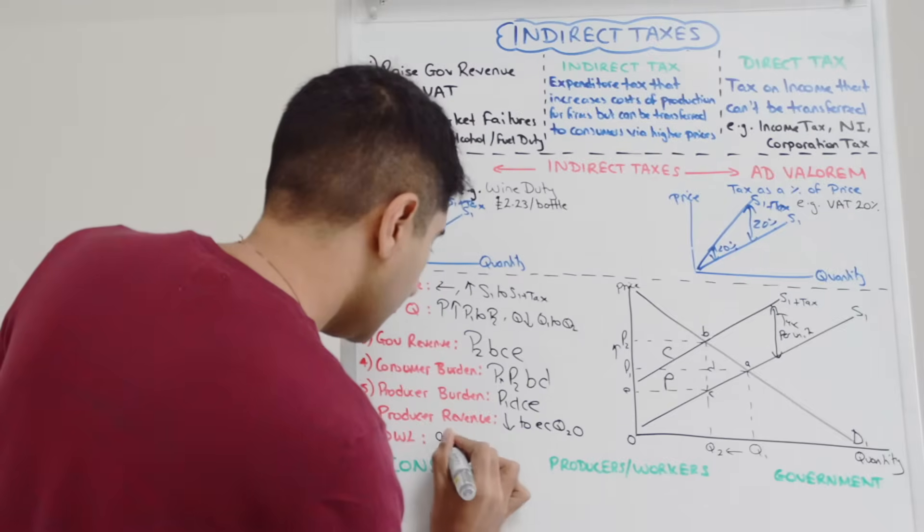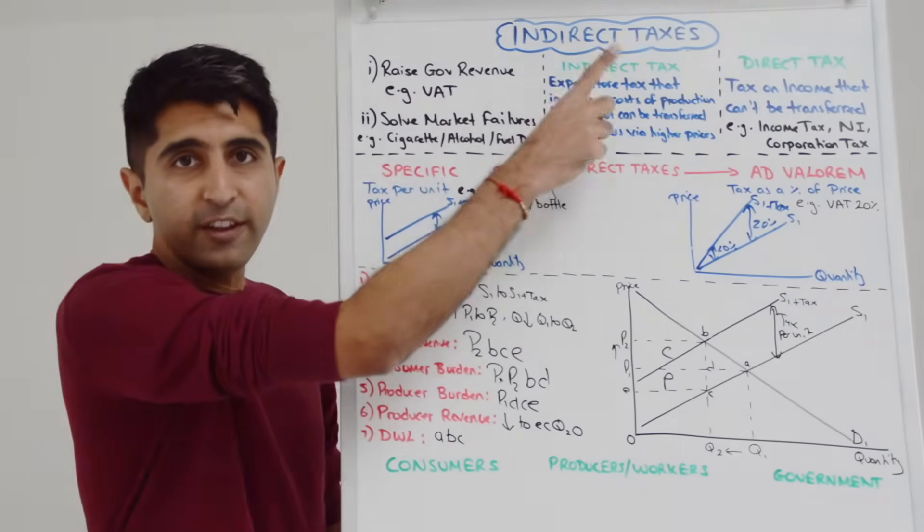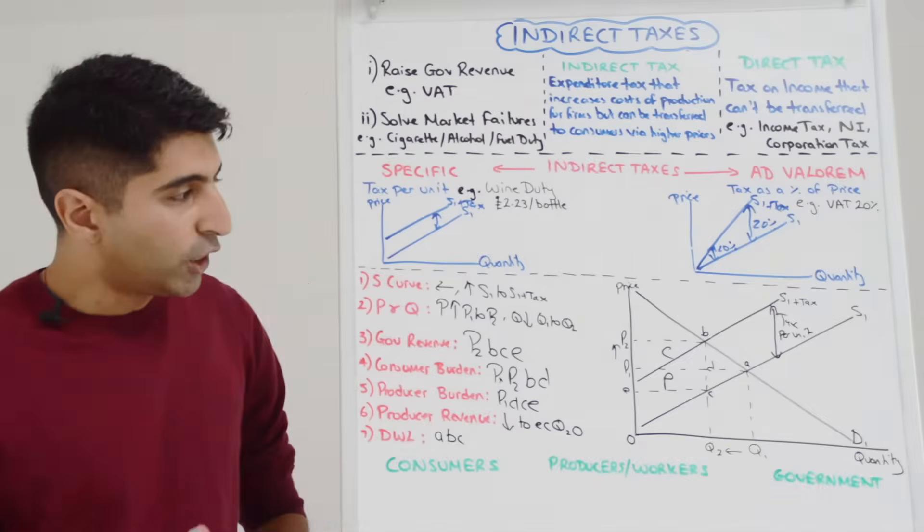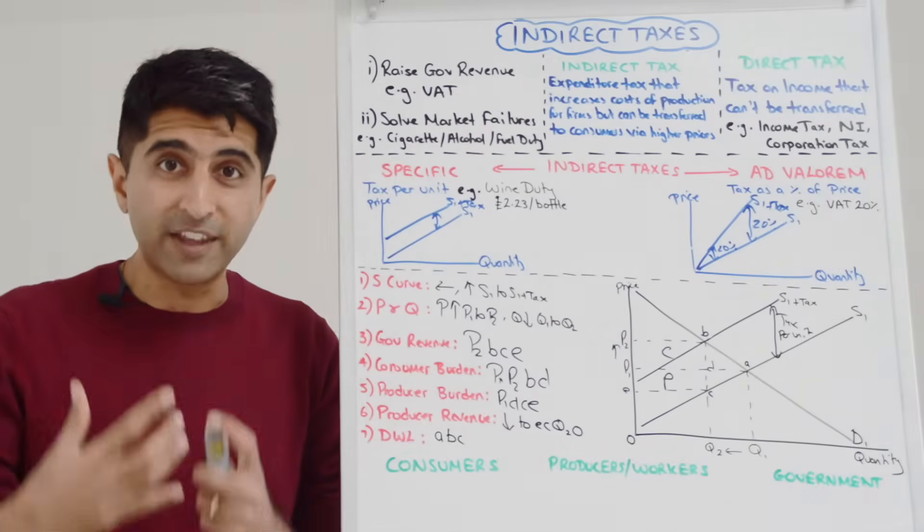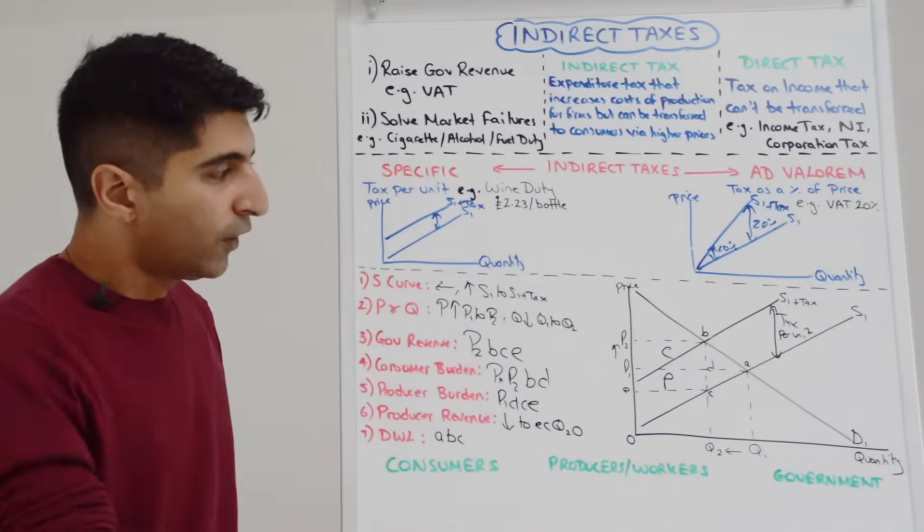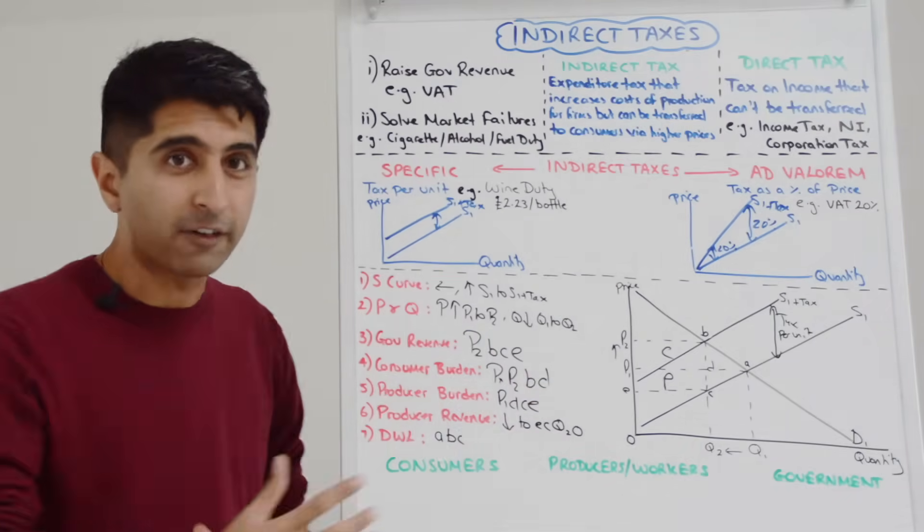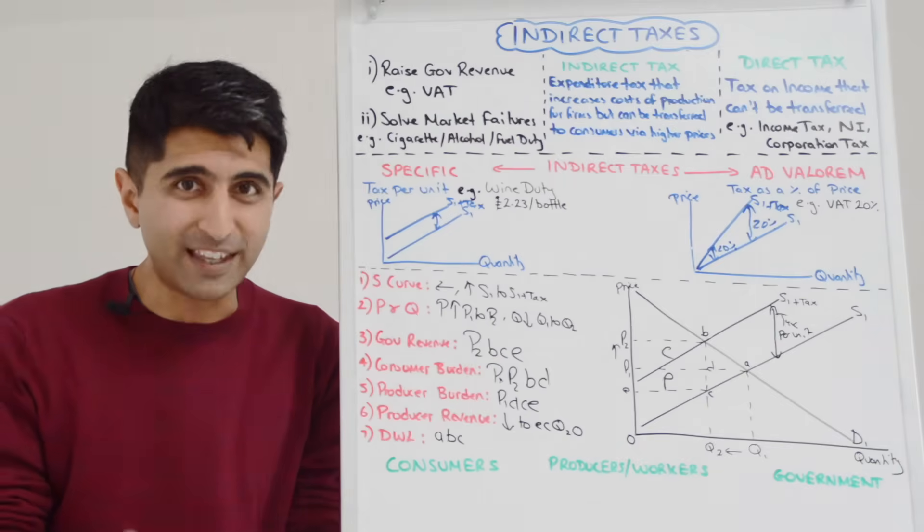If you guys click on this video over here, you will see a video where I explain why an indirect tax creates a deadweight loss and what the implications are of that. So fantastic, all these key impacts we can now see on the diagram.